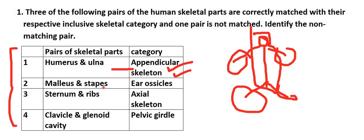Sternum and ribs are part of the axial skeleton — the thoracic region. The clavicle and glenoid cavity belong to the pectoral girdle, which is part of the appendicular skeleton — not the pelvic girdle. This is the correct answer — the non-matching pair involves the pectoral girdle being misidentified as the pelvic girdle.